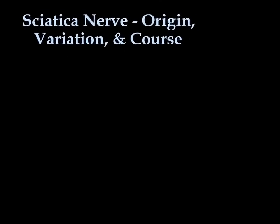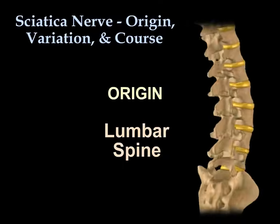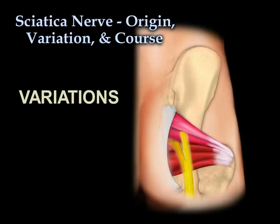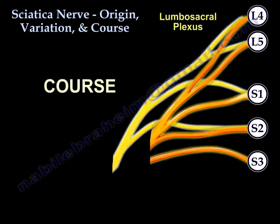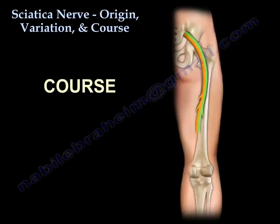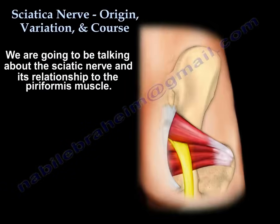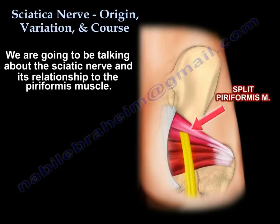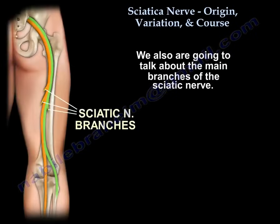Sciatic nerve. We're going to be talking about the origin of the sciatic nerve, the variations, and its course. We'll also talk about the relationship of the sciatic nerve to the piriformis muscle, and the main branches of the nerve.